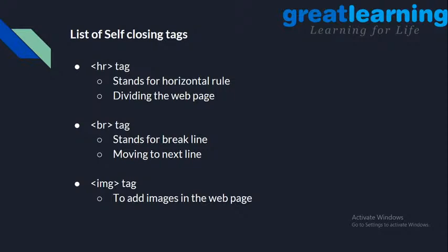The br tag stands for break line — when you want to move to the next line in your text. The image tag is used to add images to your web page. If you're trying to build a website and want to show an image, you use the image tag with a source attribute.